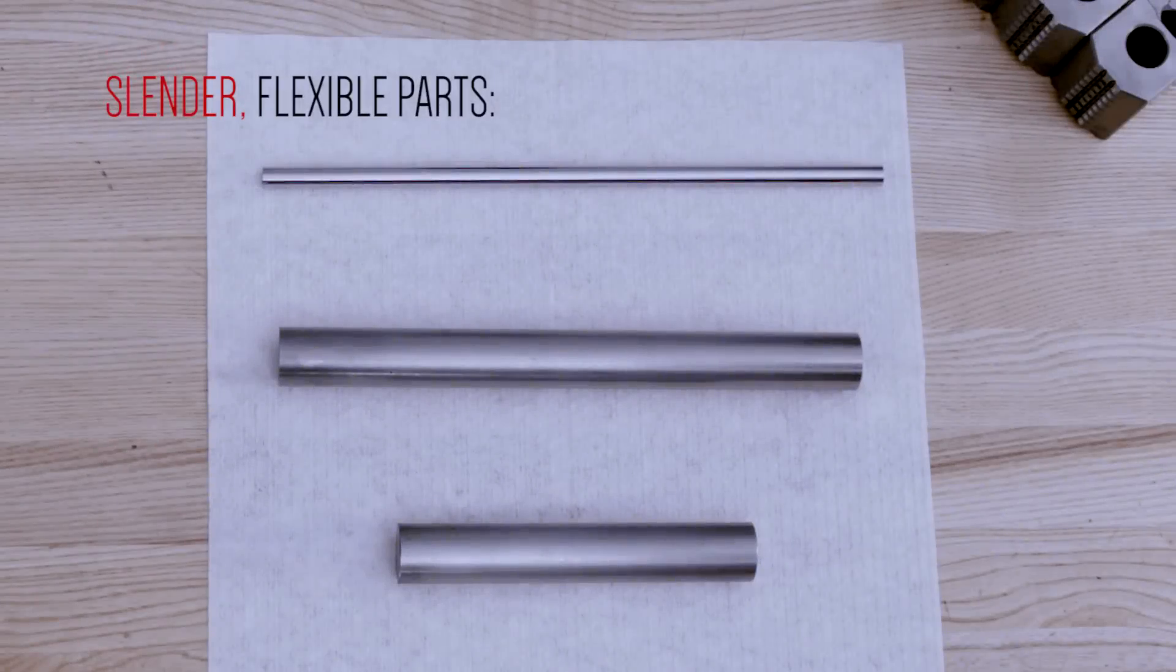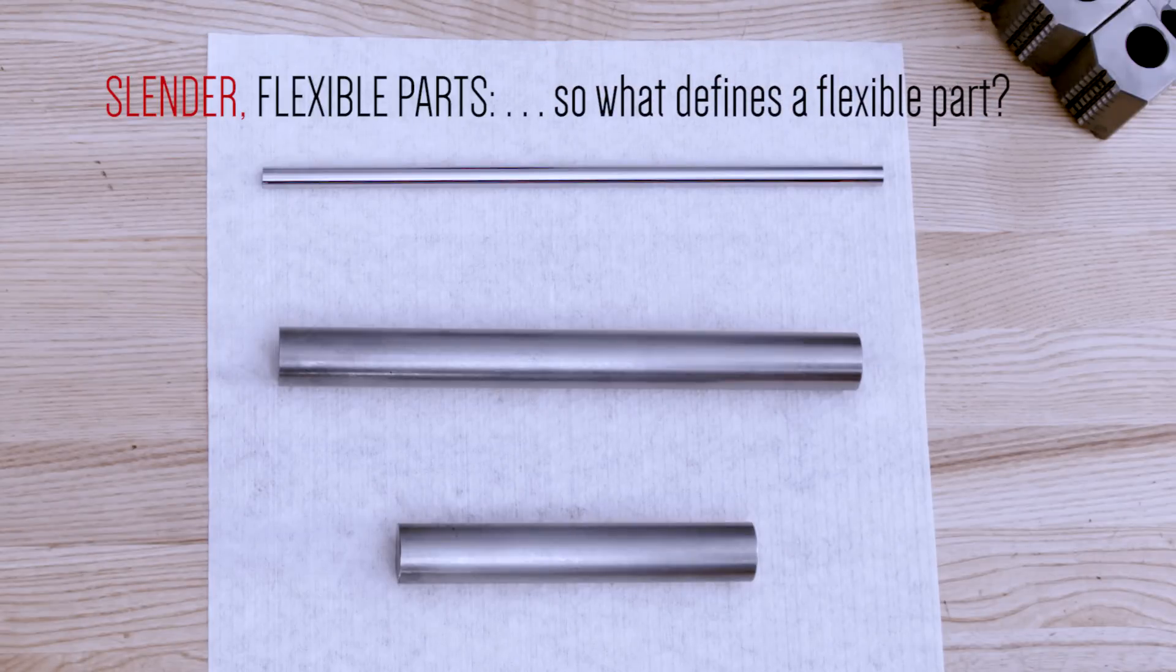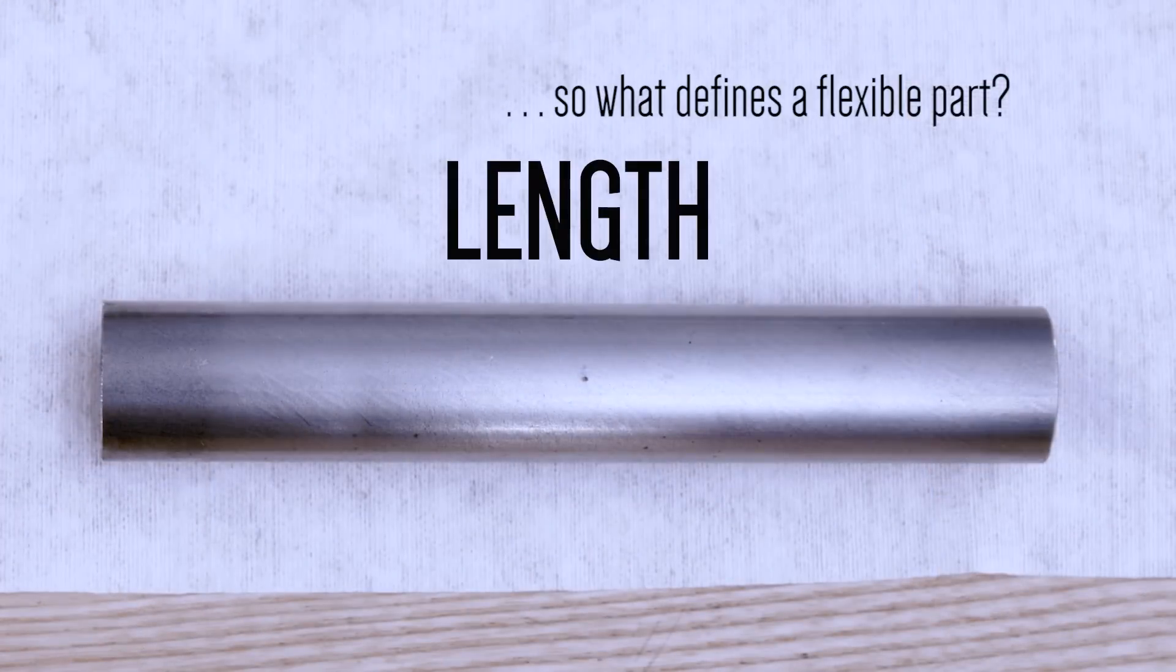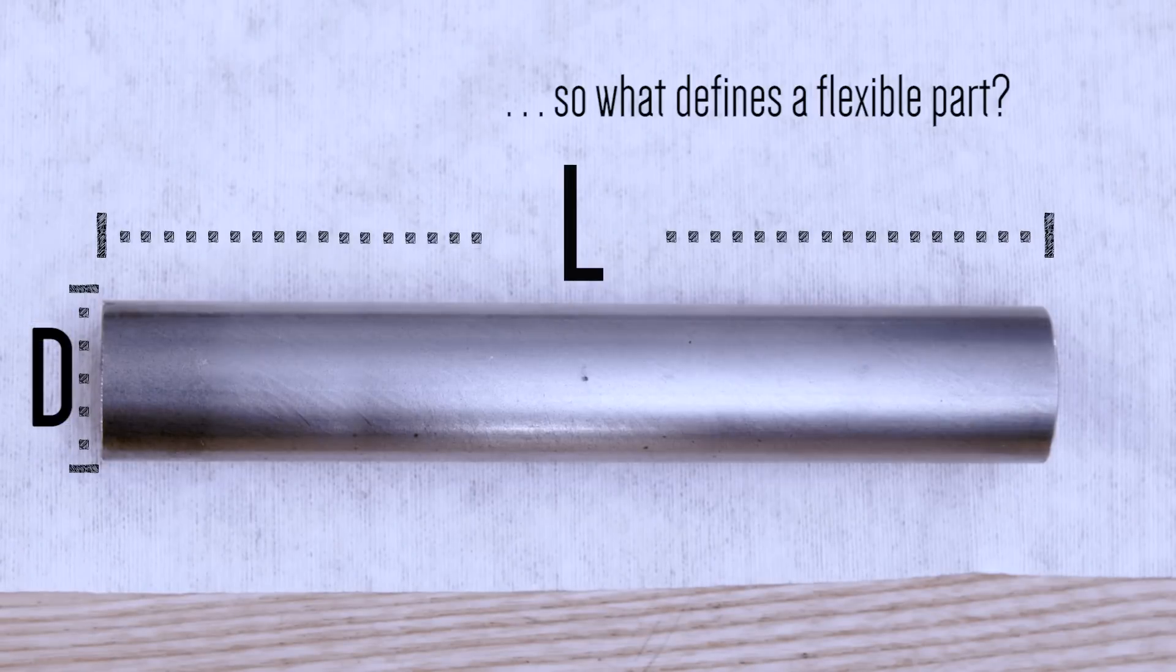Slender, flexible parts are probably the most common application where tailstock support is required. So what defines a slender, flexible part? The most common way is to refer to its length to diameter ratio, or L to D as it's often referred to.